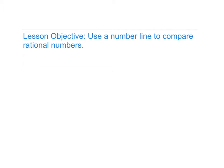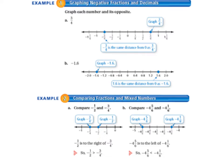Pause again while you write today's lesson objective in your math notebook. Today's objective is to use a number line to compare rational numbers. Today we'll be starting on page 262 in your math textbook.